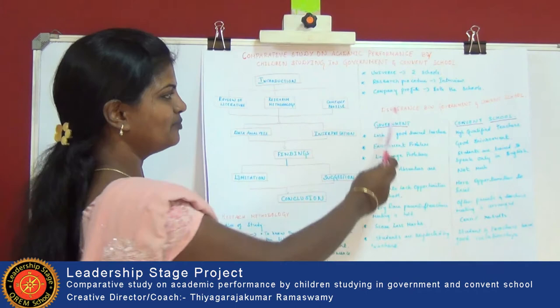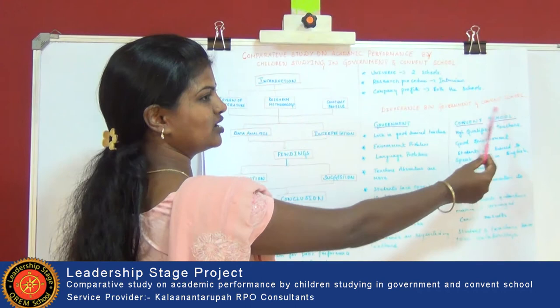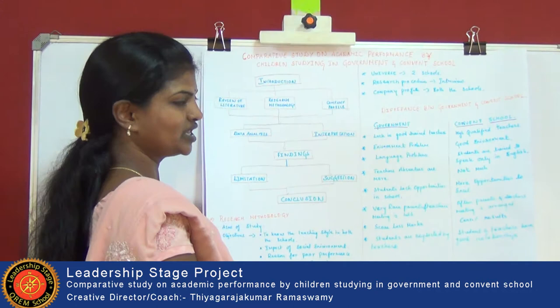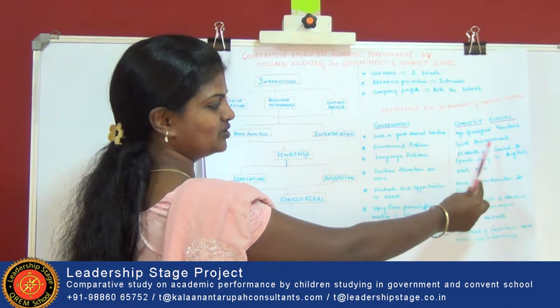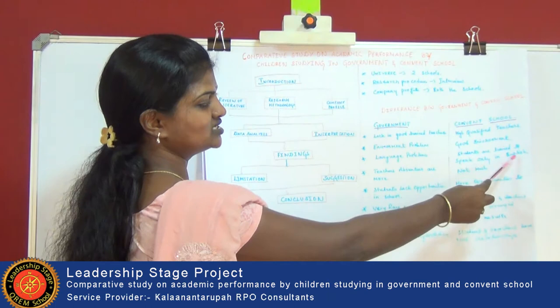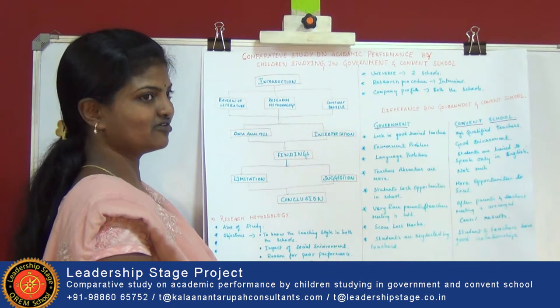A company profile of both schools — the difference between government and convent schools. The government school lacks good trained teachers, whereas in convent schools, as we know, there are highly qualified teachers. There is also an environmental problem faced by children in government schools, compared to a good environment in convent schools. There is also a language problem — in government schools, children speak in their own mother tongues, whereas in convent schools students are trained to speak mainly in English, and if they don't speak English there is a fine.